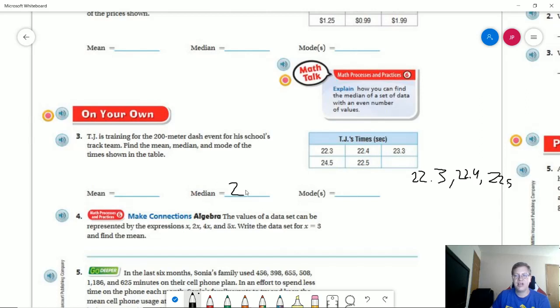So 22.5 is going to be the median. There is no mode because we do not have a repeating number.